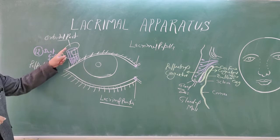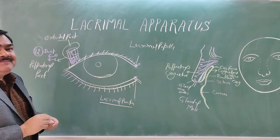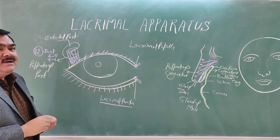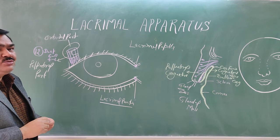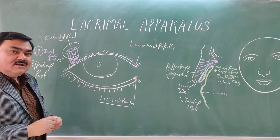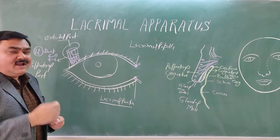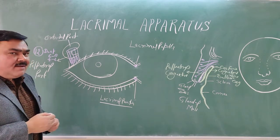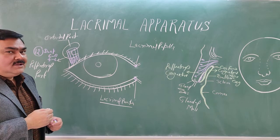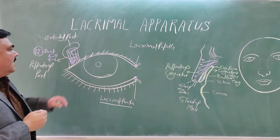The lacrimal gland is supplied by parasympathetic fibers. The lacrimal nucleus fibers pass through the nervus intermedius, then to the facial nerve, then via the greater petrosal nerve, then the nerve to the pterygoid canal, then the pterygopalatine ganglion. From the pterygopalatine ganglion, fibers pass through the maxillary nerve, then the zygomaticotemporal nerve, and from the zygomaticotemporal nerve they reach the lacrimal nerve.